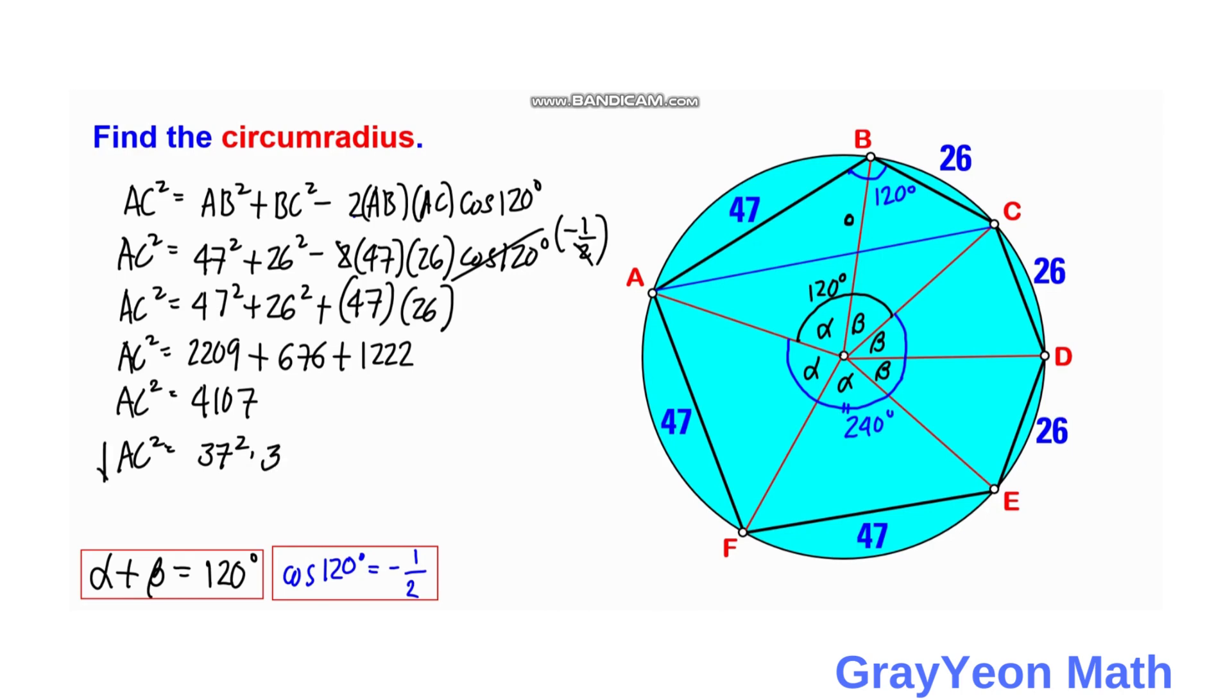If we get the square root of both sides, we have AC equals 37 square root of 3 units.